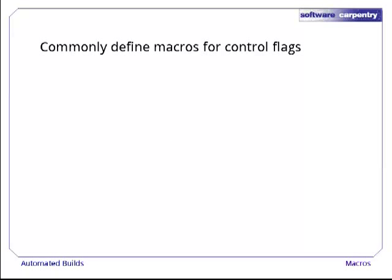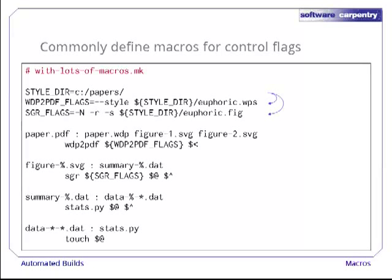Back to our makefile. It's common practice to use macros to define all the flags that tools need, so that if a tool is invoked in two or more actions, it's passed a consistent set of flags. Here, for example, we're defining styledir to point to the directory holding our style files, then using that definition in two other macros. The first, WPD_to_PDF_flags, is the single flag and argument we want to pass to the tool that turns our word processor file into a PDF. The second, SGR_flags, combines styledir with a couple of other flags to build the arguments for the tool that turns data files into SVG diagrams.